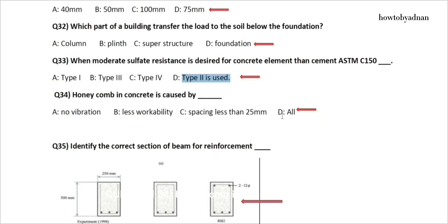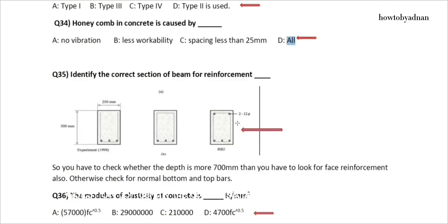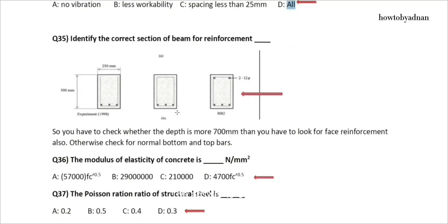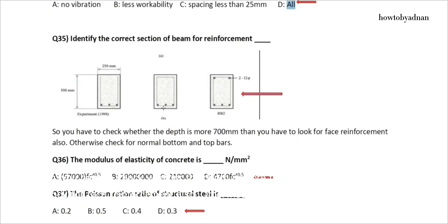Question 34: Honeycomb in concrete is caused by? The answer is option D: All. Question 35: Identify the correct section of beam for reinforcement. The answer is option A. If the depth is more than 700 millimeters, then you have to look for face reinforcement also; otherwise, check for normal bottom and top bars.